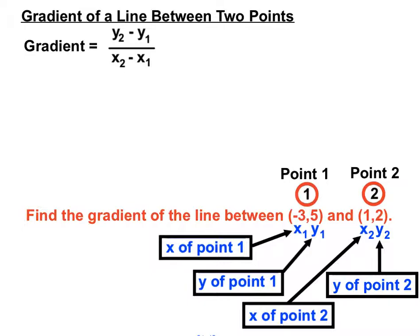Let's use those now to fill in our gradient formula. So we're first looking for y2, the y value of point two, which is that two there on the right hand side. We'll replace that y2 in our formula with a two. Now we're looking to subtract y1. The y of point one is a five, so we'll put the five in there. Then underneath here we have x2, which is the x value of point two, which is our one. We'll replace that.